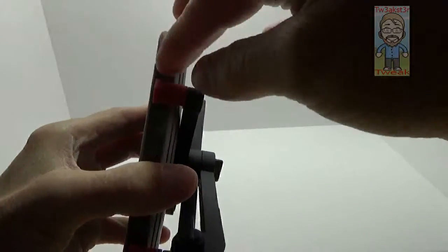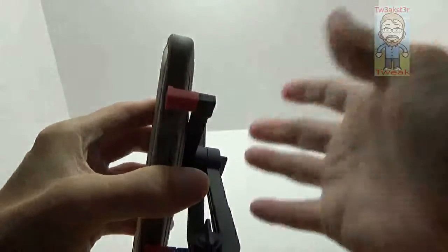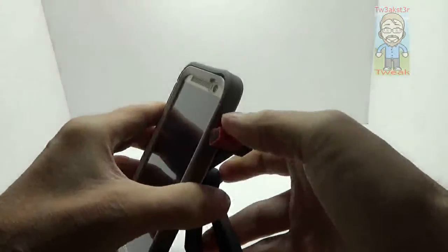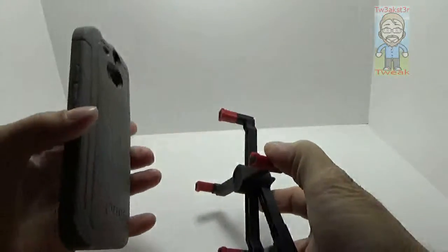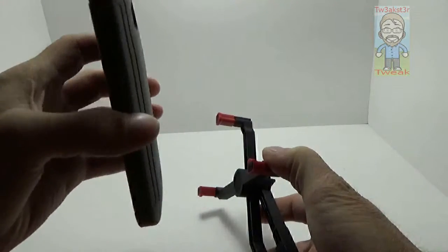My phone's in a case, so it doesn't quite reach. If this had a little bit longer arm for phones inside a case, that would probably be ideal because most people use their phones in a case. This is an OtterBox with a HTC One M8, so it's not super thick, but obviously the case adds some bulk.